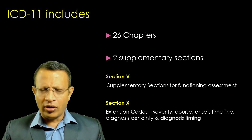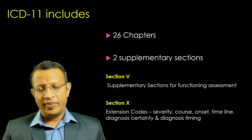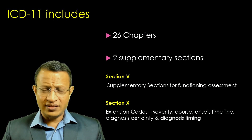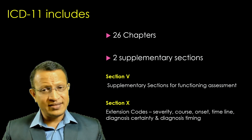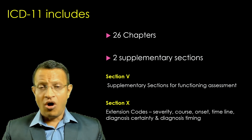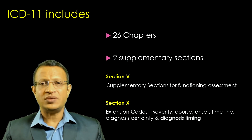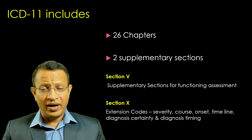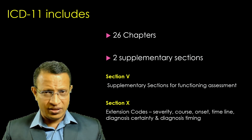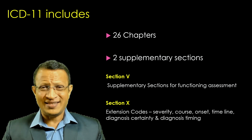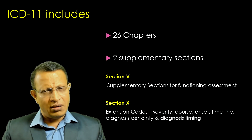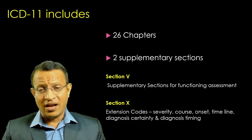The extension codes add dimensionality to ICD-11. ICD-10 has been criticized because it is highly categorical in nature — it says if you have three or four symptoms, it will be considered as illness or not. Whereas here, this section adds dimensionality: severity of the illness, course, onset, timeline, diagnosis certainty — whether provisional or confirmed — and diagnosis timing. Although the categorical nature has been kept, there is an attempt to make it dimensional, similar to DSM-5. The attempt is approximately 50 to 70 percent successful, however large differences continue to exist.